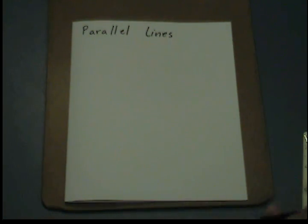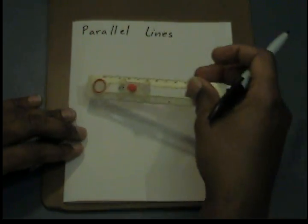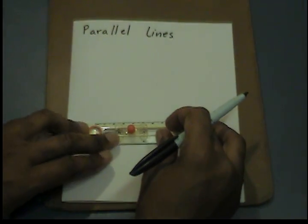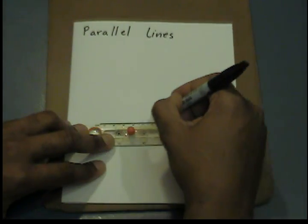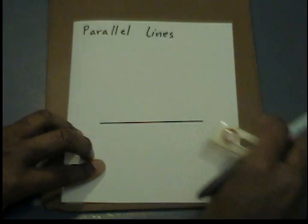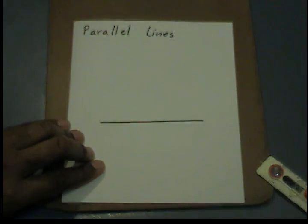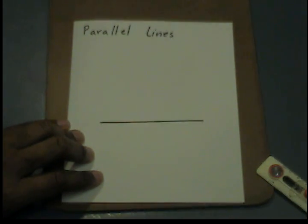First, draw a line. For our purposes, we are going to label the line AB.